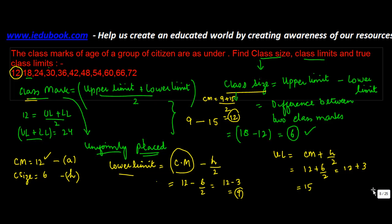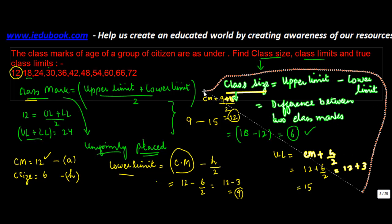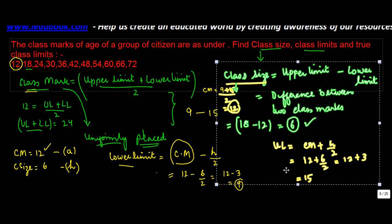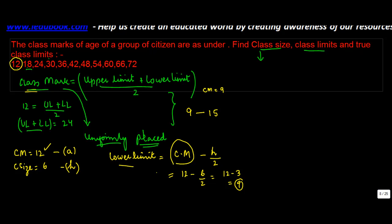So, now considering this, let's find out all other classes. So basically you have 9 to 15 as the first class. Now, if 18 is the second class mark, so you need to subtract 3 from here. 18 minus 3 will give you 15, and 18 plus 3 will give you 21. Again, 24 is the third class mark.